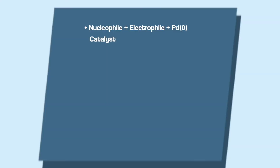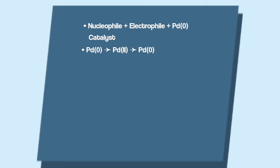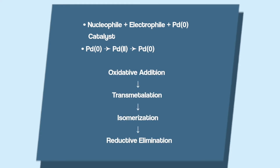Now we have our full cycle. To summarize: for cross-coupling reactions you need a nucleophile, an electrophile, and a metal catalyst — usually palladium in oxidation state zero. During the reaction, palladium changes its oxidation state from zero to two and back. The catalytic cycle consists of the oxidative addition, the transmetalation, the trans-cis isomerization, and the reductive elimination.